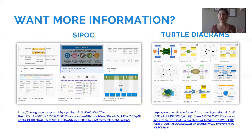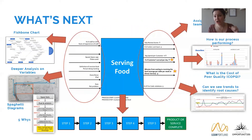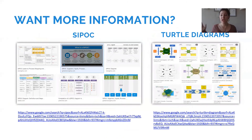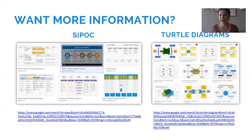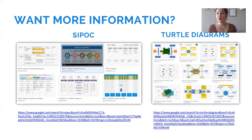If the input-process-output isn't enough for your team and you want more information on the page, you can use the SIPOC — Supplier, Input, Process, Output, Customer — diagram or a turtle diagram. Both tools contain the IPO and are incredibly dynamic. They're great before doing a value stream map or a Kaizen, and turtle diagrams work well before designing a standard operating procedure.